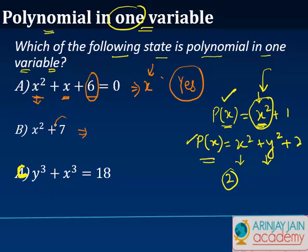The second one, 7 is fixed, only x squared is something which can vary. Again, this following state of the polynomial is one variable. The answer is yes.